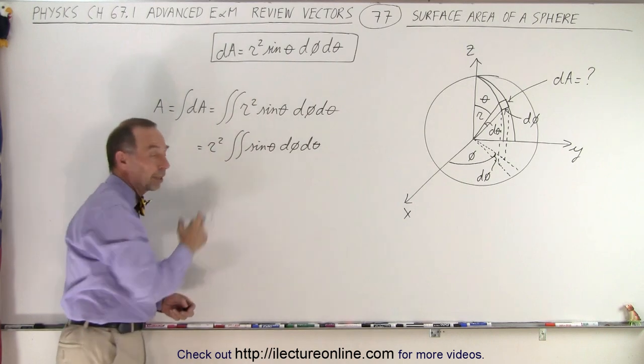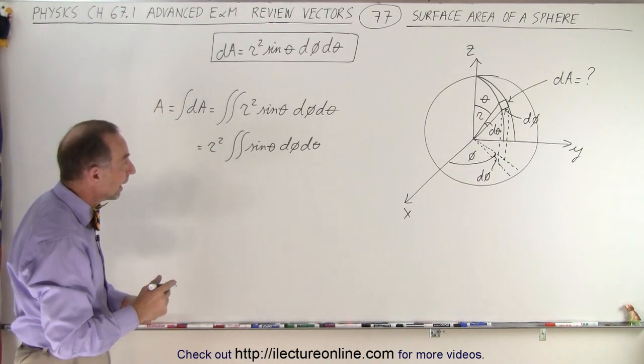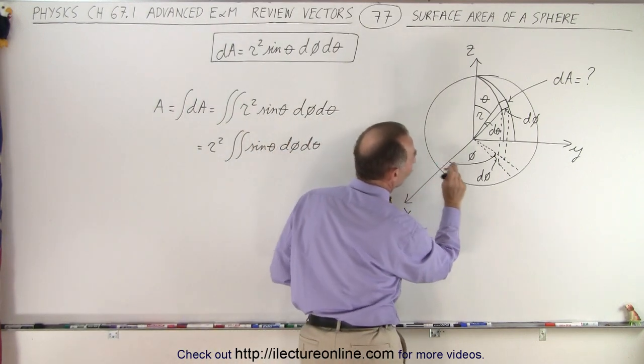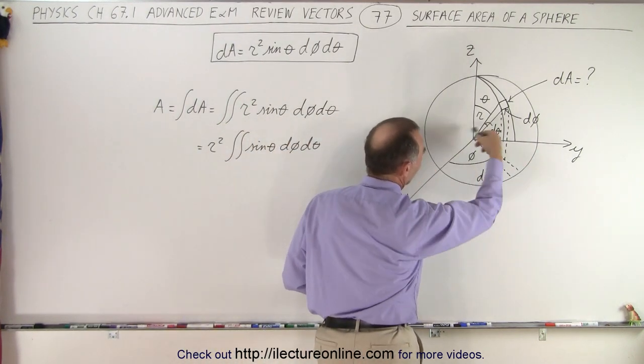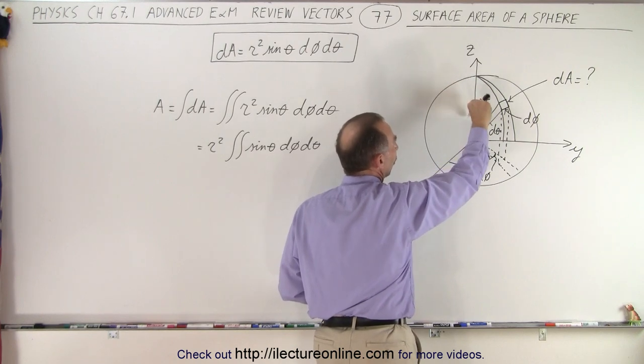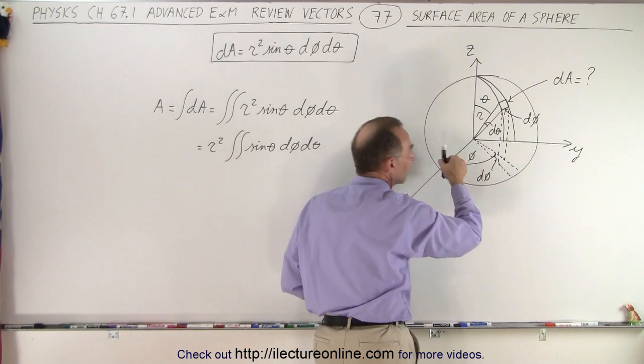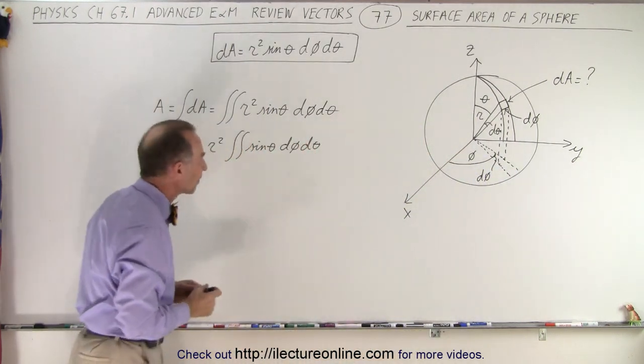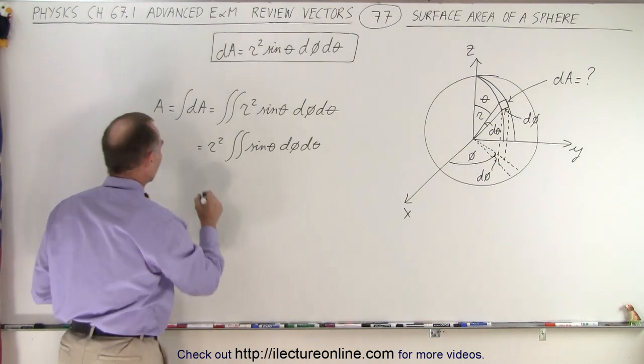Alright, so now it becomes just integrating that. It's a double integral and the limits of integration: for the angle phi, we go all the way around the circle, so we go from 0 to 2π. And for the angle theta, we go anywhere from 0 all the way to π, from up all the way down. We go all the way around the circle to get the full surface of the sphere.